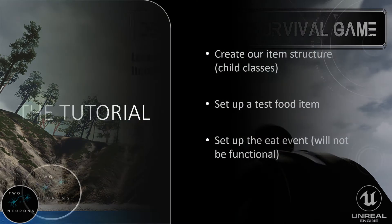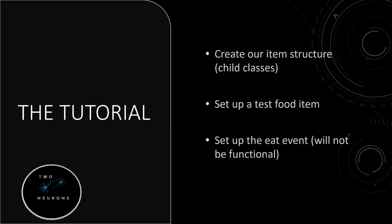In this tutorial, we'll be setting up our item structure, and in particular we'll be setting up our child and sub-child classes to do so. We'll be focusing mostly on our food, and therefore we'll be creating two test food items. There will be one from our herb class and one from our meat class. We haven't created those classes yet — that's part of today's lesson. And we'll also set up an event for when we do eat food.